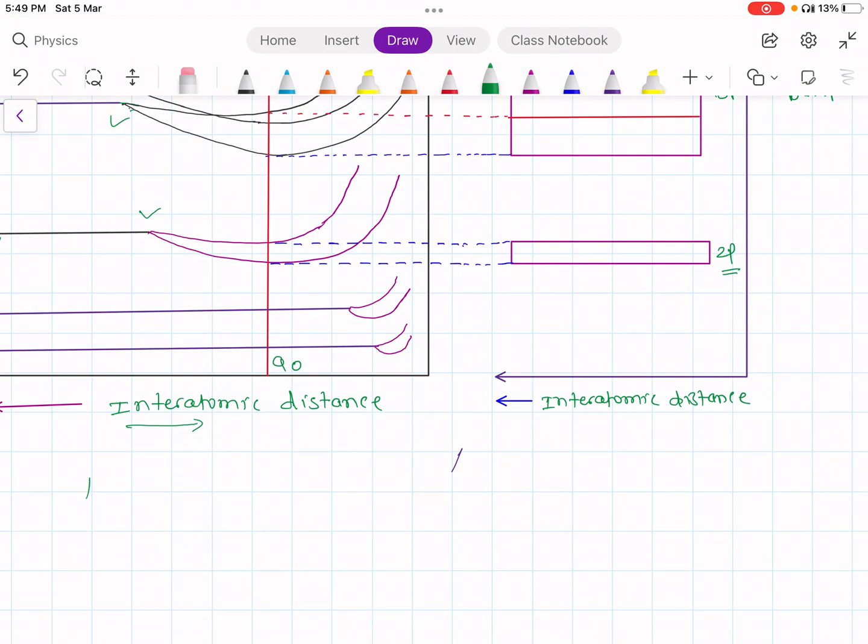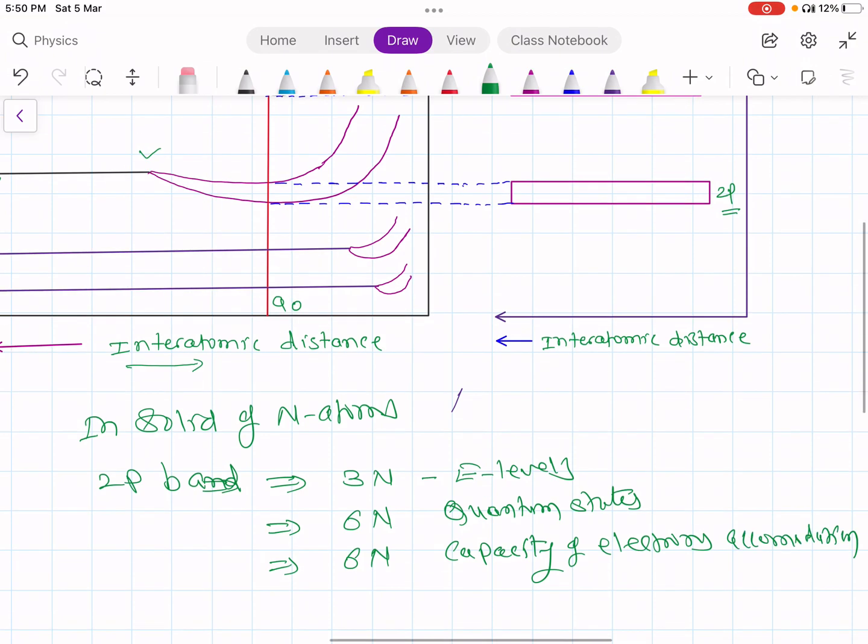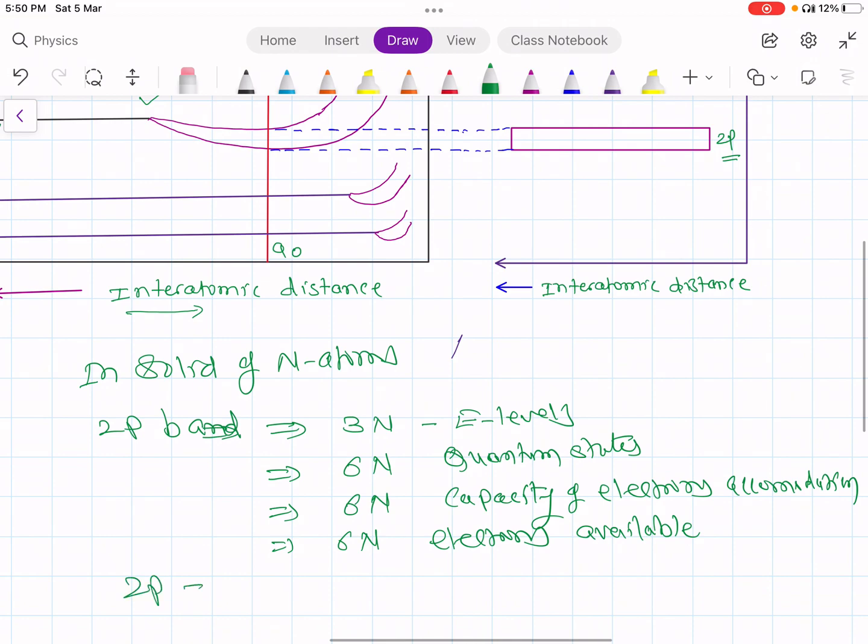Consider these two bands. In a solid of N atoms, this 2p band will be having 3n energy levels, 6n quantum states. Its capacity is to accommodate 6n electrons. 6n capacity of electrons accommodation. And there are 6n electrons available. Therefore this 2p band is completely filled.